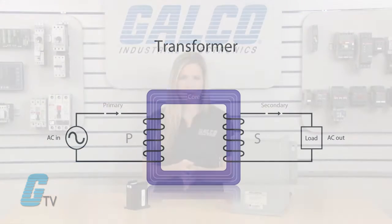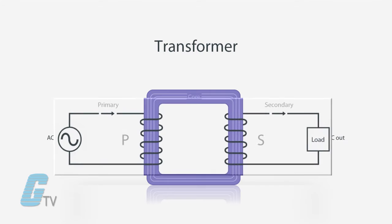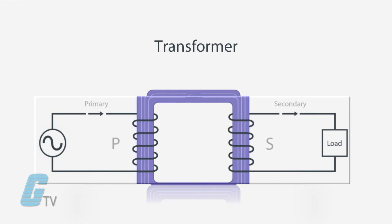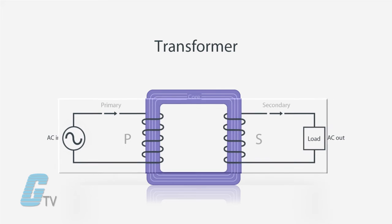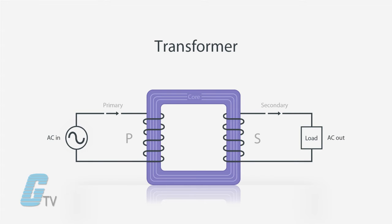Depending on the requirement of the load, the incoming electric power is either increased or decreased. Transformers have two windings: a primary winding and a secondary winding. The primary winding is the coil that draws power from the source, while the secondary winding is the coil that delivers the energy at the transformed or changed voltage to the load. Usually, these two coils are subdivided into several coils in order to reduce the creation of flux.